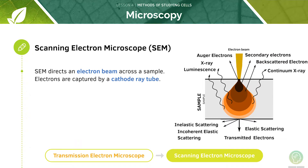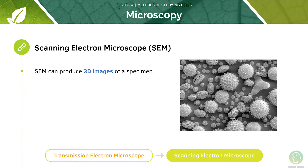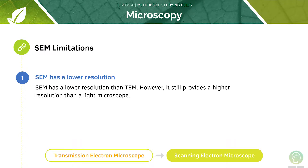Now let's look at SEM. SEM is different from TEM in that it projects electrons across a specimen instead of simply passing them through it. The scanning process releases electrons from the specimen which are captured in the cathode ray tube, and these captured electrons create the image of the specimen. SEM can produce 3D images and can scan the surface of the specimen to capture all the textures. Unlike TEM, SEM is used to see thick specimens. Compared to TEM, SEM provides much lower resolution; however, it still provides higher resolution than a light microscope.